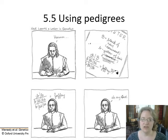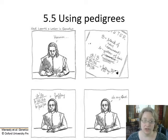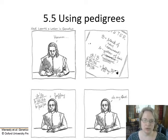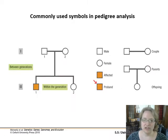Last chunk of chapter five, and we're going to go over pedigrees and the types of pedigree problems that your book and I are going to pose and how to work through them. So let's take a look at just some of the terminology here, our commonly used symbols.